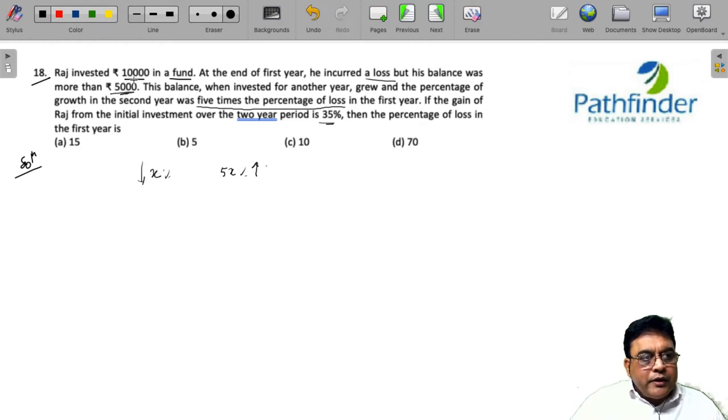If he lost x percent over 10,000 rupees, after one year his amount should have been 10,000 multiplied by 100 minus x upon 100. And if in the next year it grew by five times, then his profit or the net value should have been 100 plus 5x upon 100.